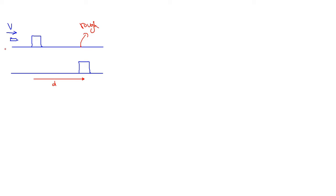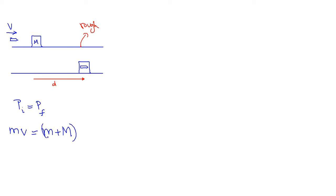Let's first apply conservation of momentum. The initial velocity of the block is zero. When the bullet gets embedded in the block, they both move together at velocity v prime. The mass of the bullet is small m, velocity of the bullet is v. The block's mass is capital M. After embedding, total mass is small m plus capital M, moving at velocity v prime.